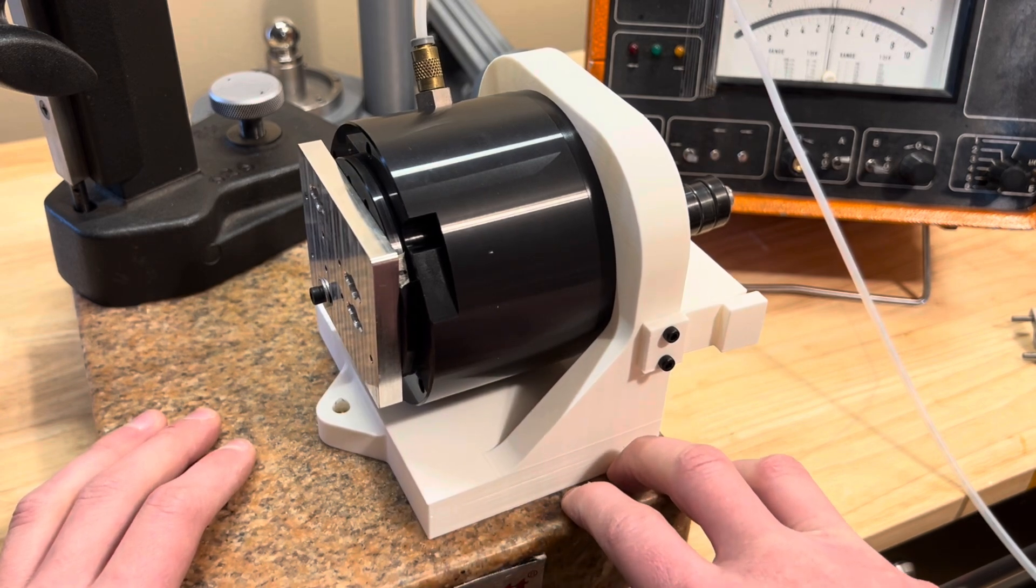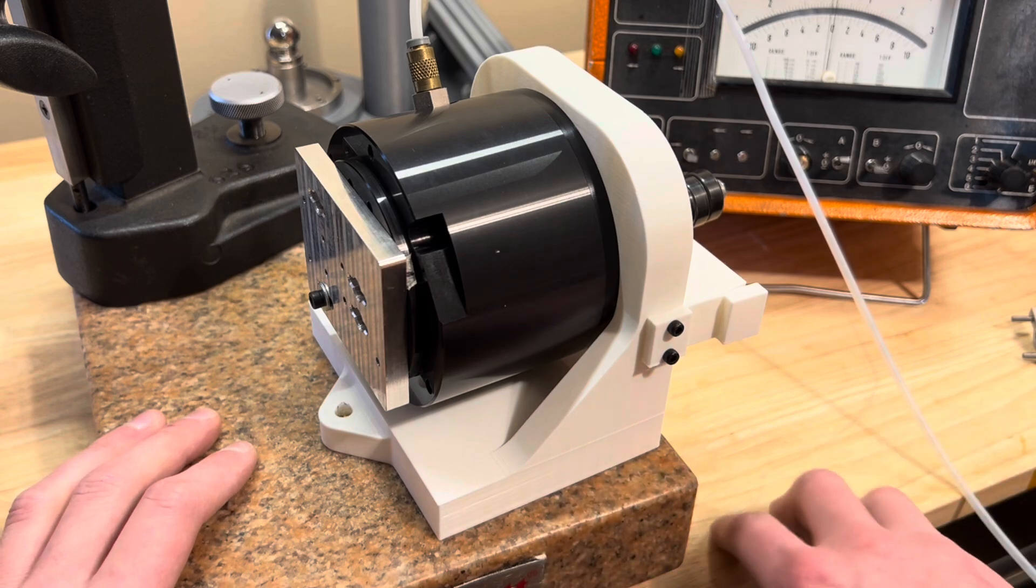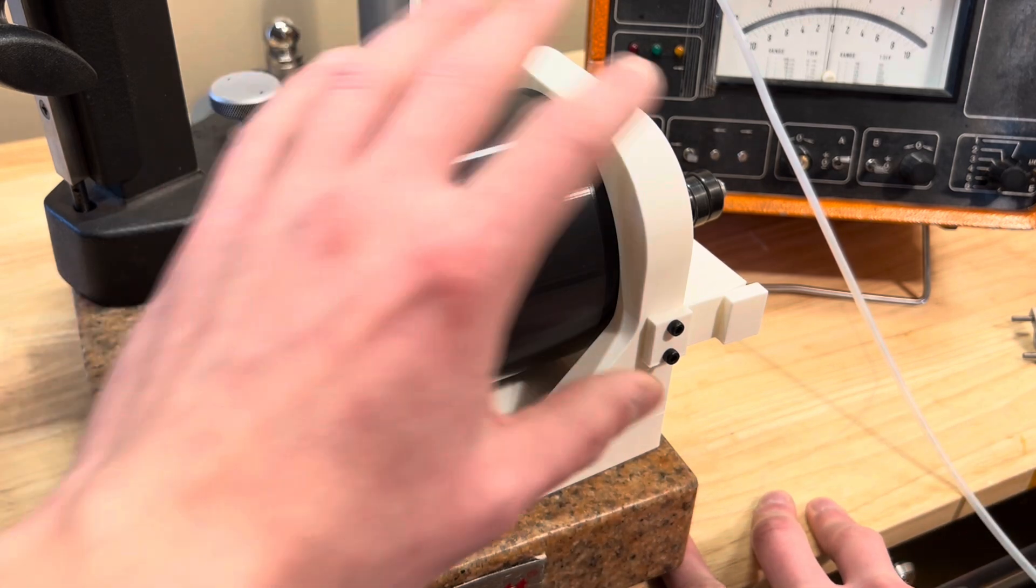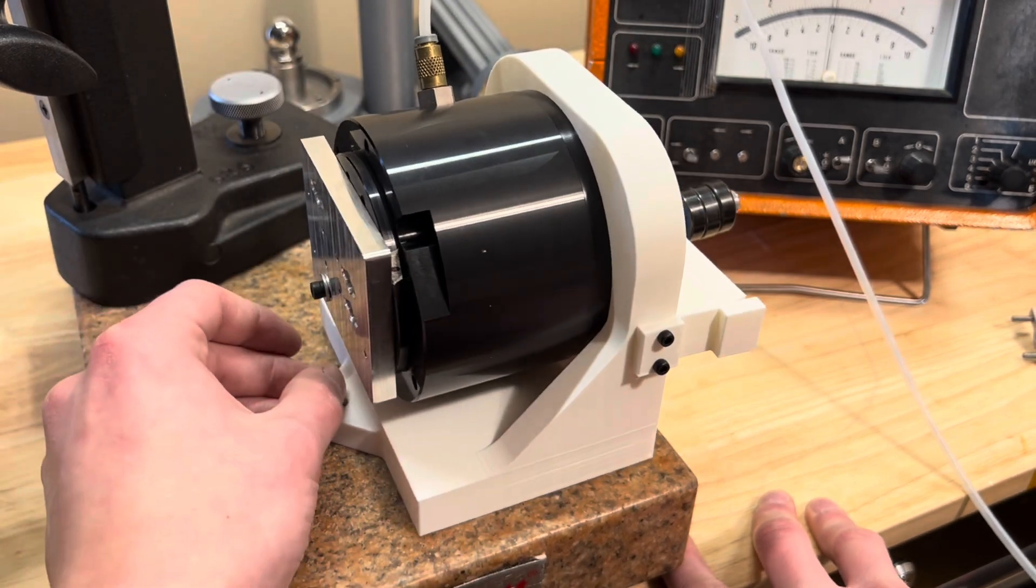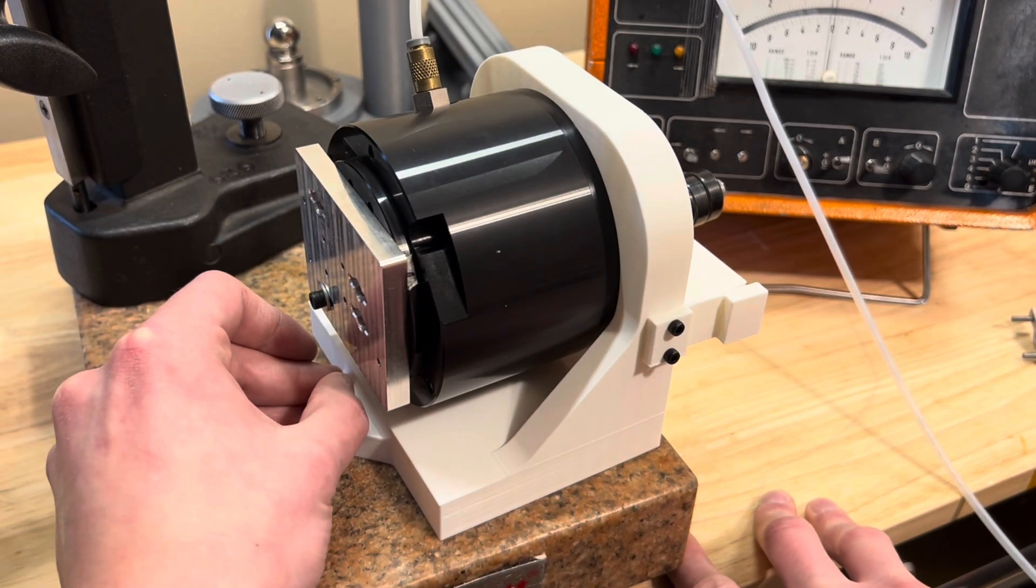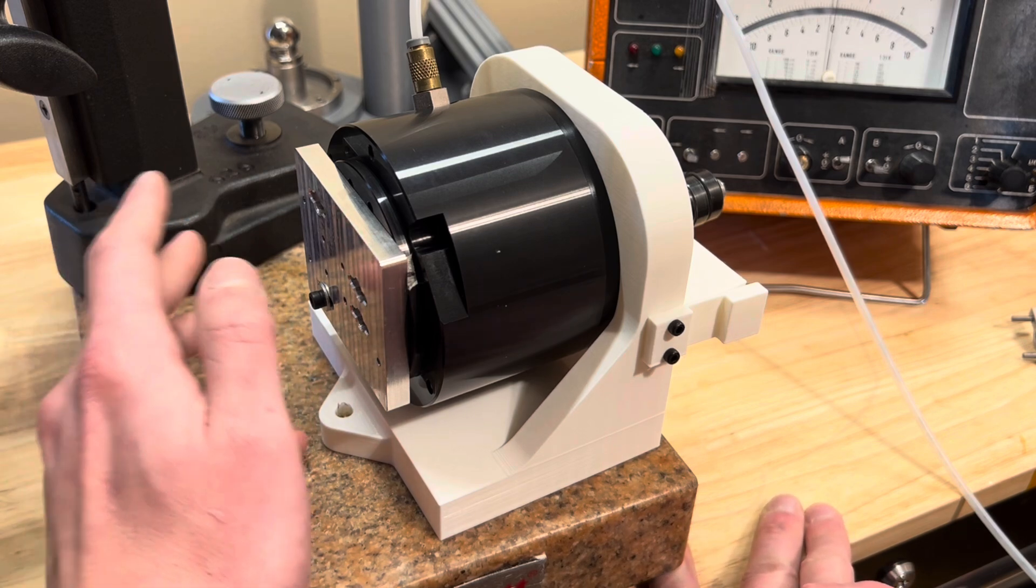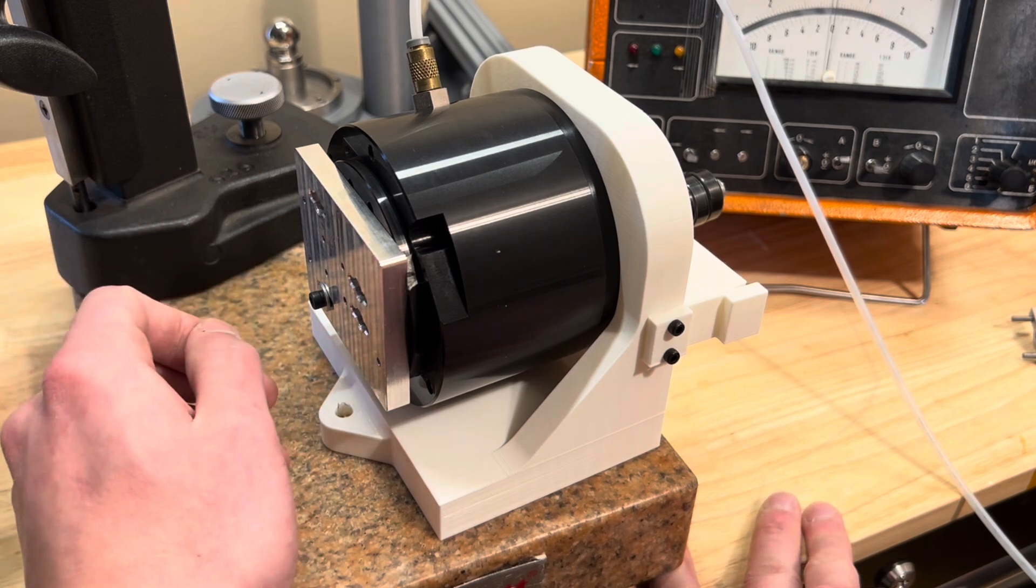But how do you make the square body that square in any reasonable cost-effective manner? So he describes a fixture in that interview and I got some comments asking, I didn't quite follow, what did he mean by that?